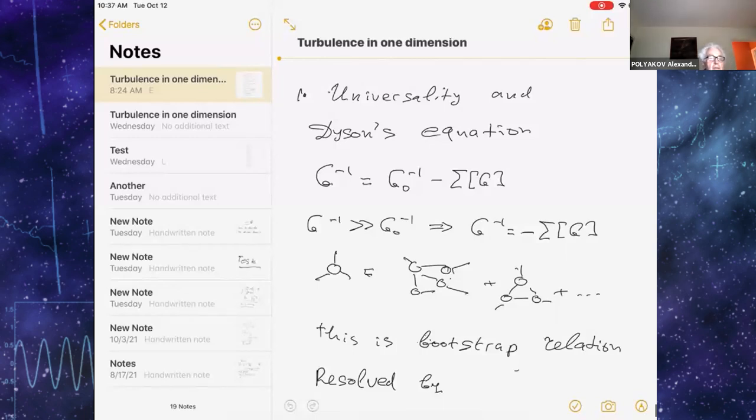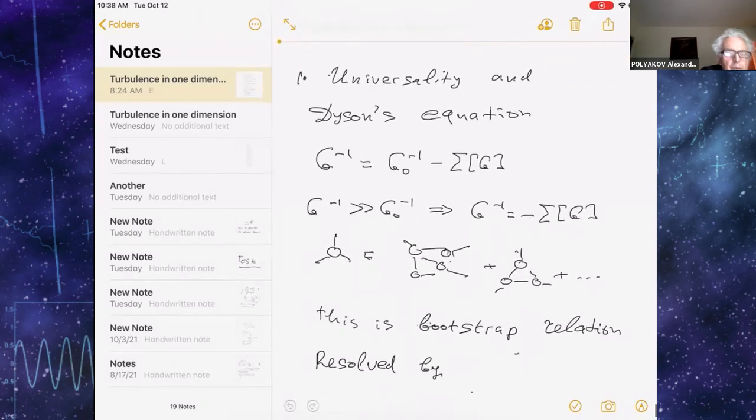First, there is a common phenomenon which exists in both critical phenomena and turbulence, and this is universality. Universality means that when you change a little parameters, like interaction between spins or boundary condition of the fluid, at small enough perturbations, small enough perturbations are irrelevant.